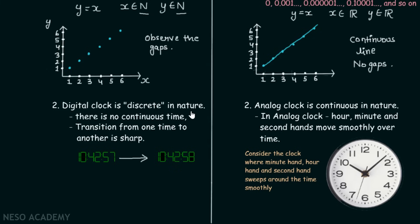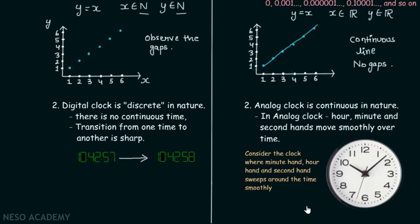A digital clock is discrete in nature, because there is no continuous time and the transition from one time to another is very sharp. For example, consider a clock showing 10 hours 42 minutes 57 seconds — the transition from 57 seconds to 58 seconds is very sharp, with no points in between. On the other hand, an analog clock is continuous in nature, where the hour, minute, and second hands move smoothly over time — sweeping around continuously rather than jumping sharply.